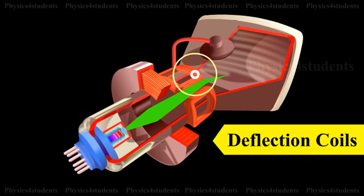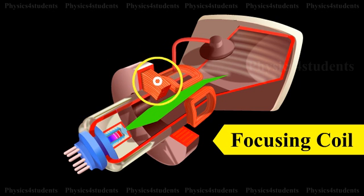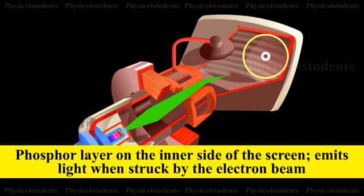This is the deflection coil. This is the electron beam. It is the focusing coil. A phosphor layer on the inner side of the screen which emits light when struck by the electron beam.